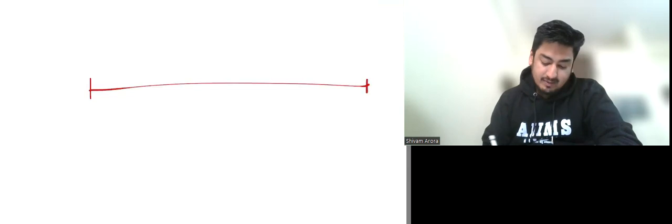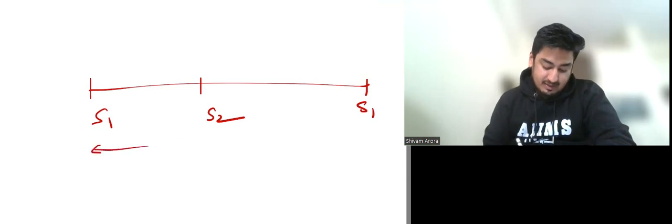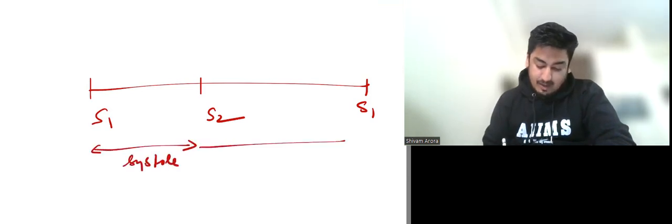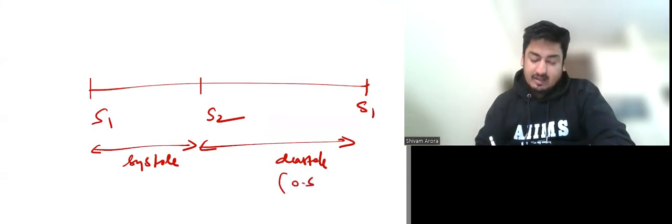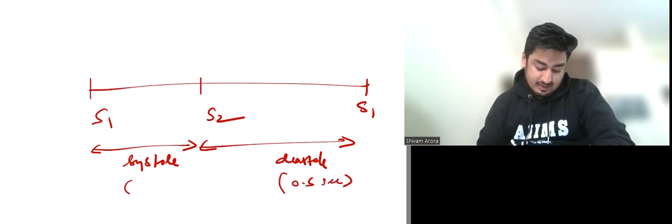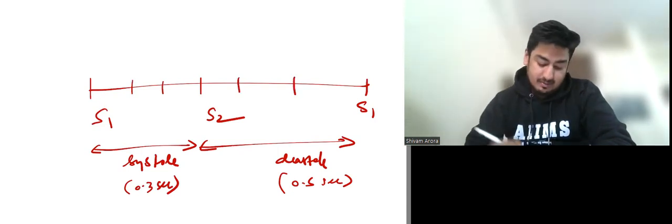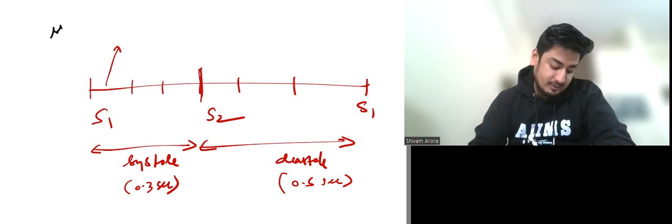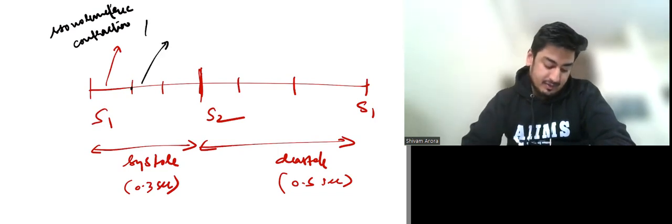Before discussing the JVP waveform, I want to discuss this easy diagram of the cardiac cycle. S1 and S2 divide the cardiac cycle: the longer phase is diastole at 0.5 seconds and systole is 0.3 seconds. Systole has three phases: isovolumetric contraction, then opening of aortic and pulmonary valves leading to rapid ejection, and then slow ejection.